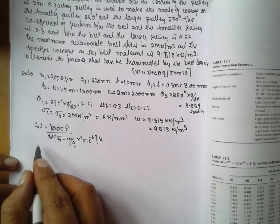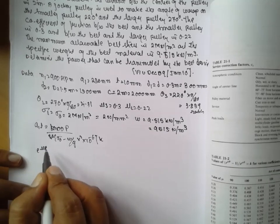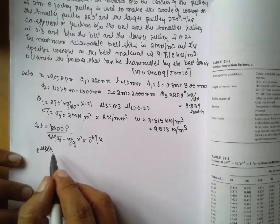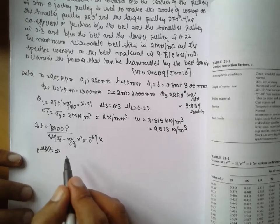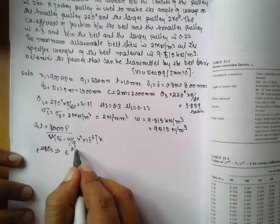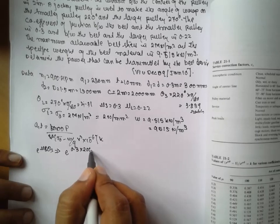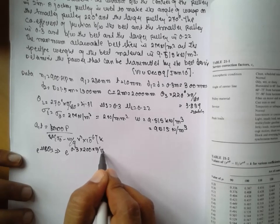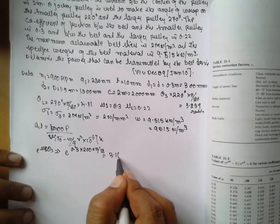Interesting is nothing but which mu we have to take. Therefore, E raised to mu theta, E raised to mu S theta S is nothing but E to the 0.3 into 220 into pi by 180. Answer will be 1.64.